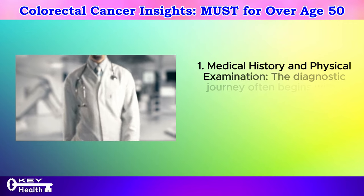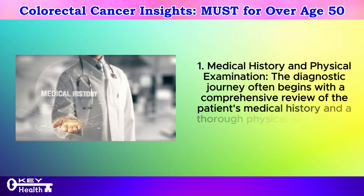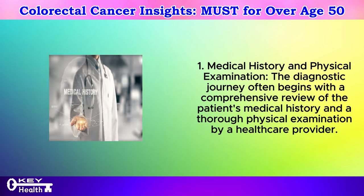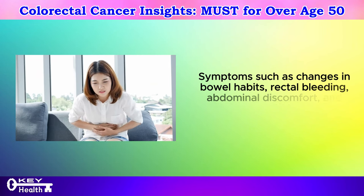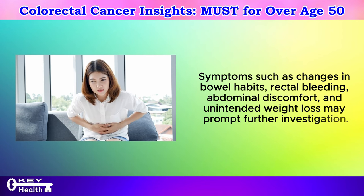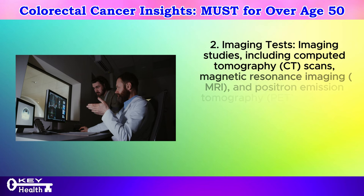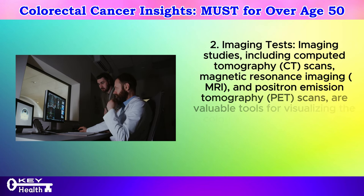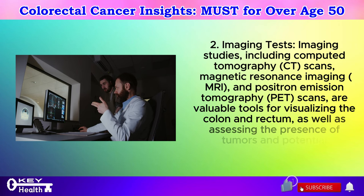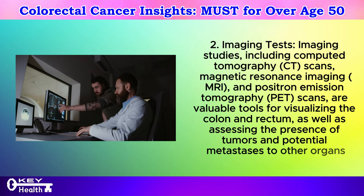Diagnostic process step 1: Medical history and physical examination. The diagnostic journey often begins with a comprehensive review of the patient's medical history and a thorough physical examination by a healthcare provider. Symptoms such as changes in bowel habits, rectal bleeding, abdominal discomfort, and unintended weight loss may prompt further investigation. Step 2: Imaging tests — including computed tomography (CT) scans, magnetic resonance imaging (MRI), and positron emission tomography (PET) scans — are valuable tools for visualizing the colon and rectum, as well as assessing the presence of tumors and potential metastases to other organs.